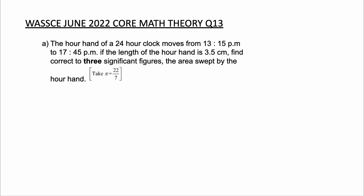Hi guys, welcome to Sabonzi Academy. In today's video we'll be solving question 13 of the 2022 WASSCE June Commerce Theory questions. We'll begin with question 13a. The hour hand of a 24-hour clock moves from 13:15 pm to 17:45 pm. If the length of the hour hand is 3.5 centimeters, find correct to three significant figures the area swept by the hour hand. Take pi to be 22 over 7.